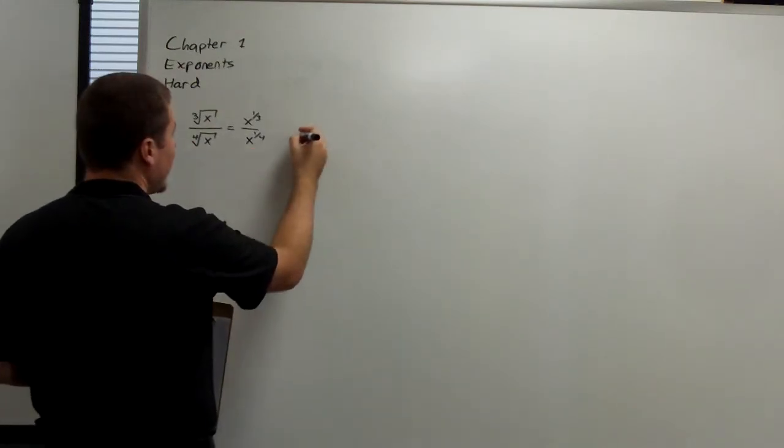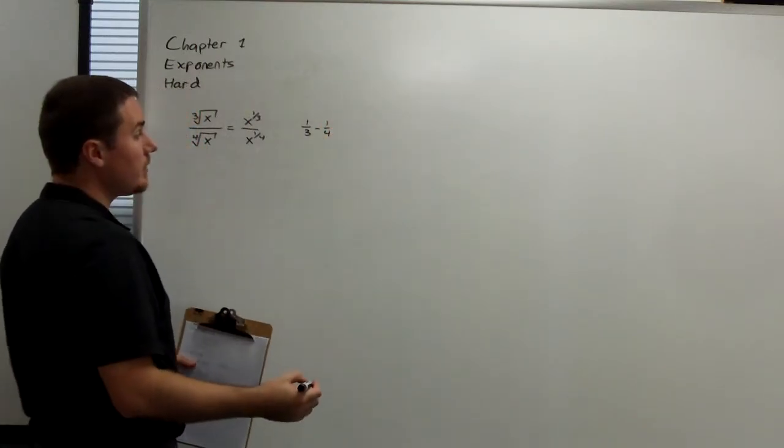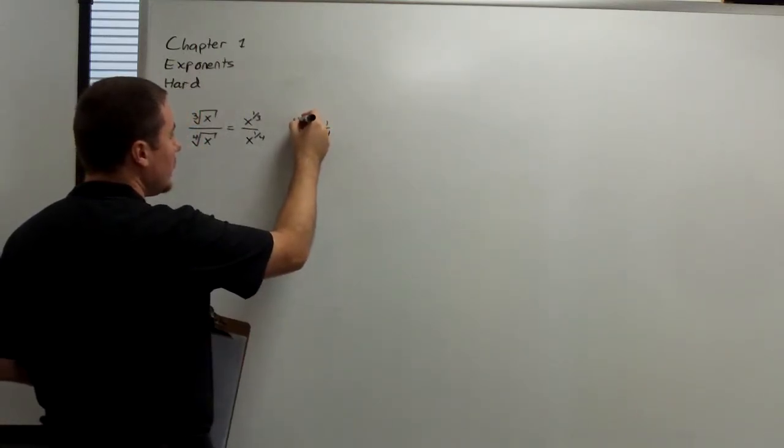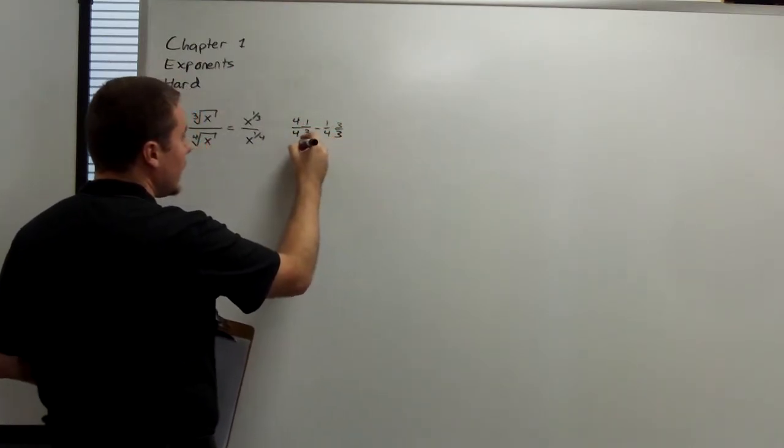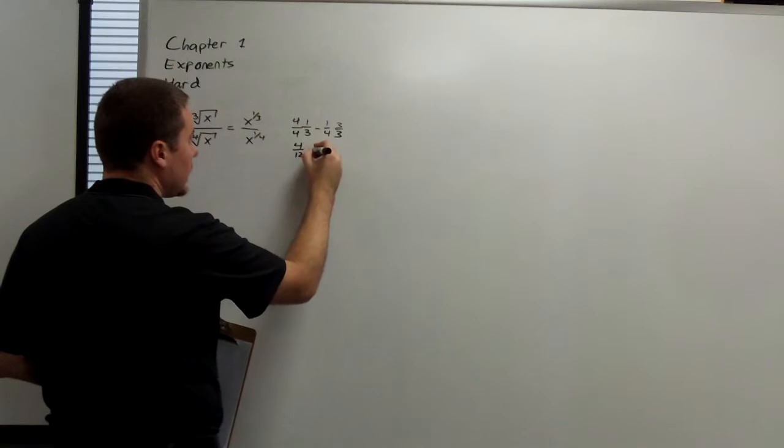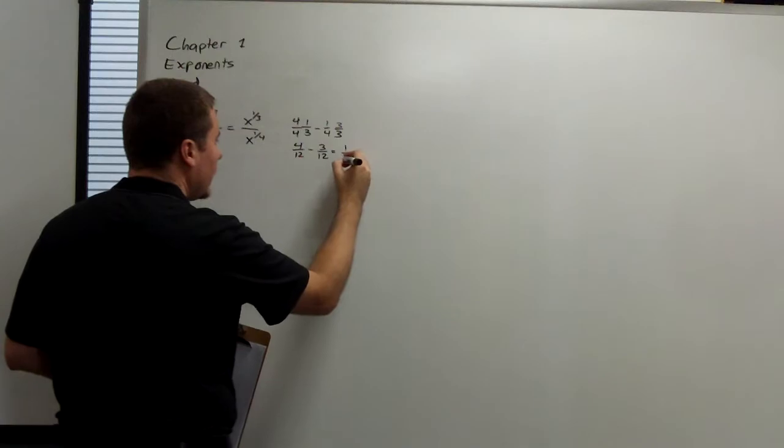We have to do a little bit of fraction math here. One-third minus one-fourth. The common denominator is twelve, so we need four over four here, and three over three here. We have four-twelfths minus three-twelfths, which equals one-twelfth.